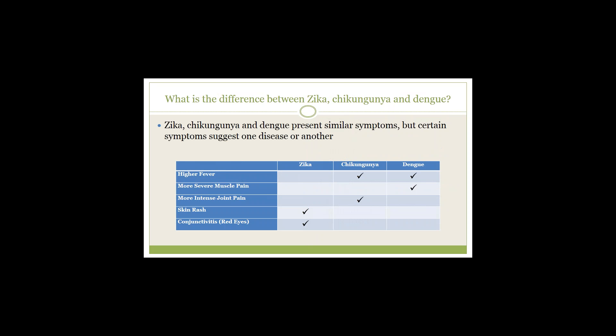What is the difference between Zika, chikungunya, and dengue? All these diseases present with similar symptoms, but certain symptoms suggest one disease or another and help doctors make a diagnosis. Dengue usually presents with higher fever and more severe muscle pain, and when the fever breaks, attention should be paid to warning signs such as bleeding. Chikungunya presents with a higher fever and more intense joint pain affecting the hands, feet, knees, and back — it can disable people. Zika does not have clearly characteristic features, but most patients have skin rashes and some have conjunctivitis or red eyes.